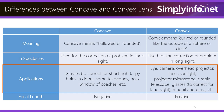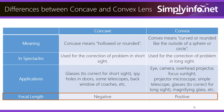Convex lens uses include: the eye, camera, overhead projector, focusing sunlight, projector microscope, simple telescope, glasses to correct for long sight, magnifying glasses, etc. The focal length for a concave lens is negative, whereas for a convex lens it is positive.